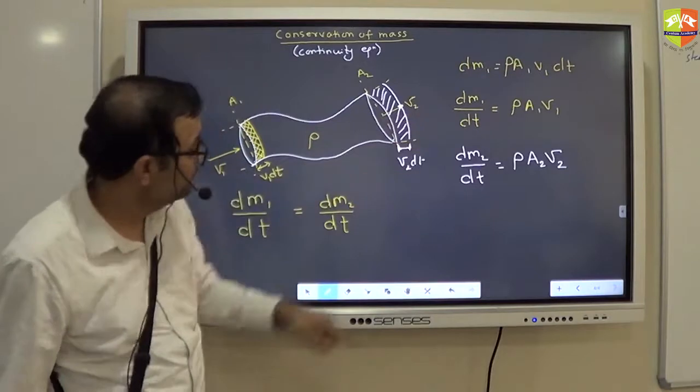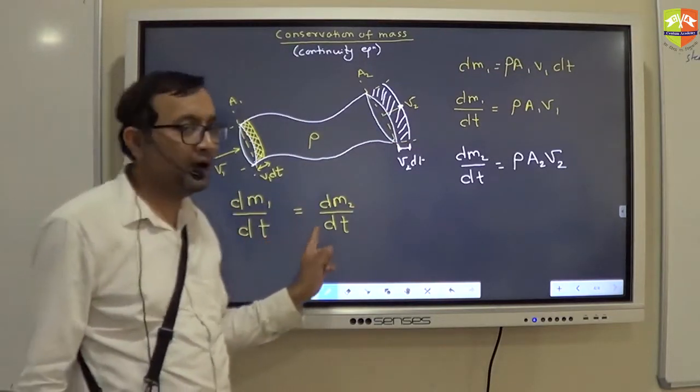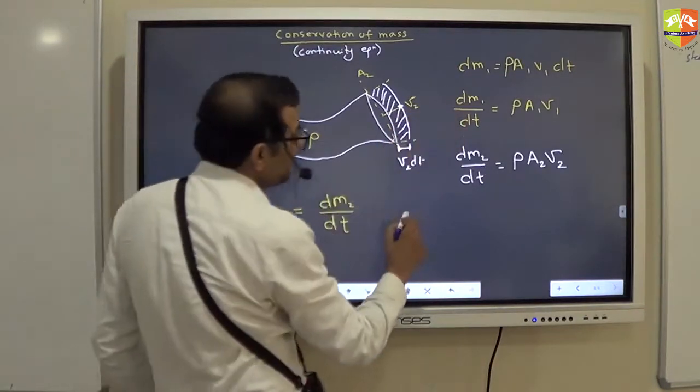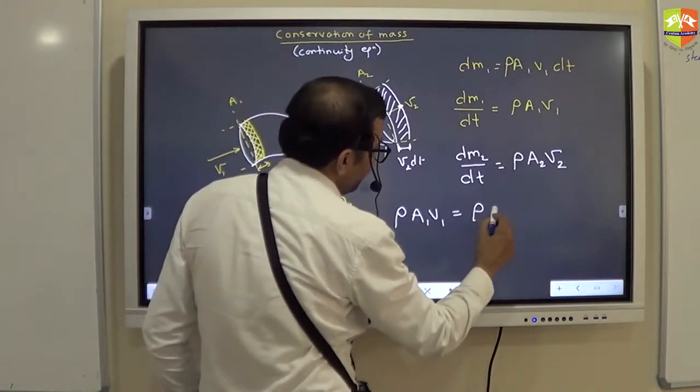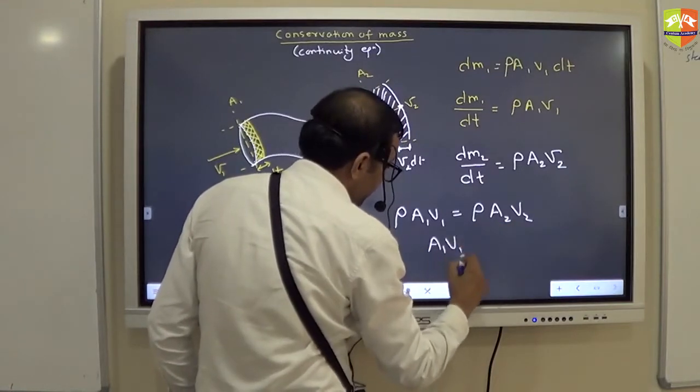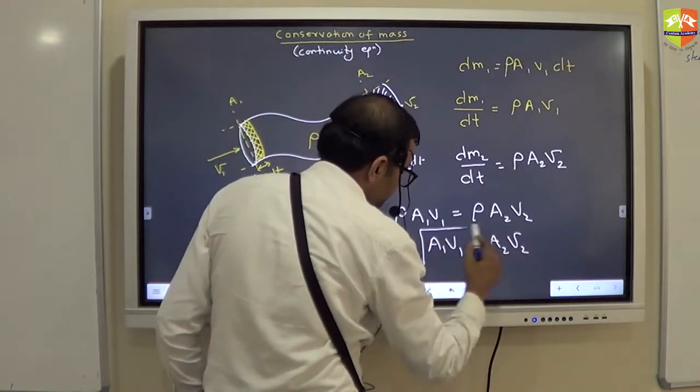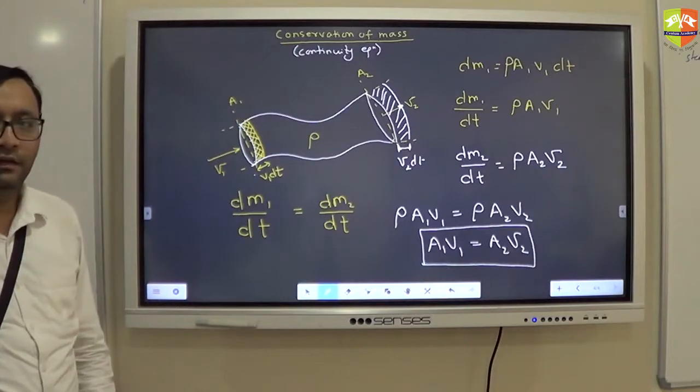Now, these two are equal. The mass that is entering from the left hand side should be equal to mass that is exiting from the right hand side per unit time. So, when you equate these two, you are going to get rho A1 V1 equal to rho A2 V2. This is same as A1 V1 being equal to A2 V2.